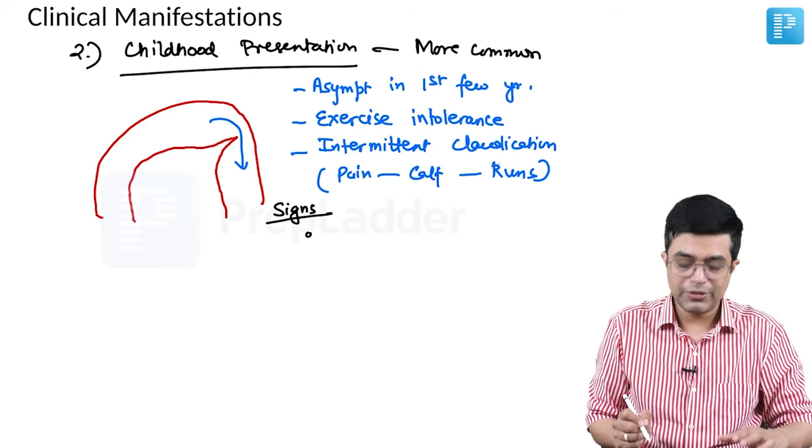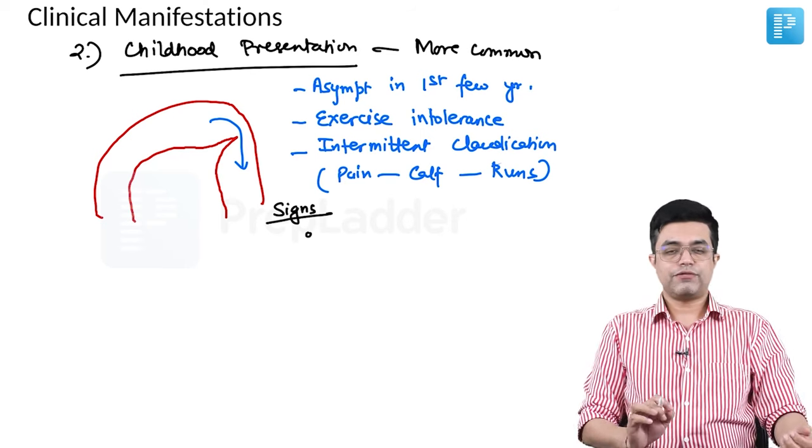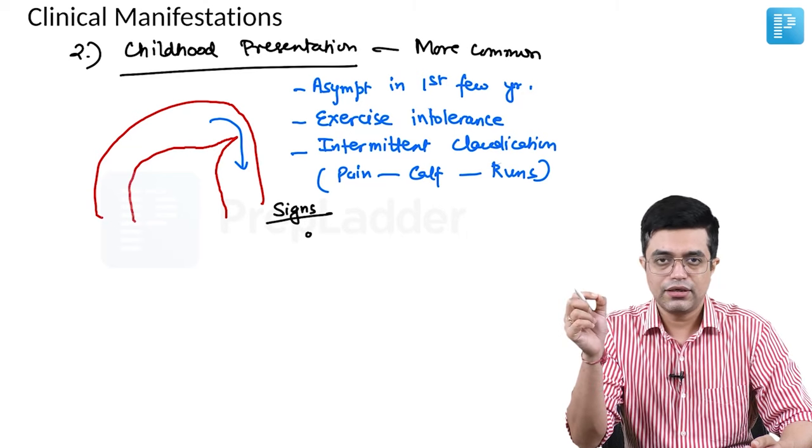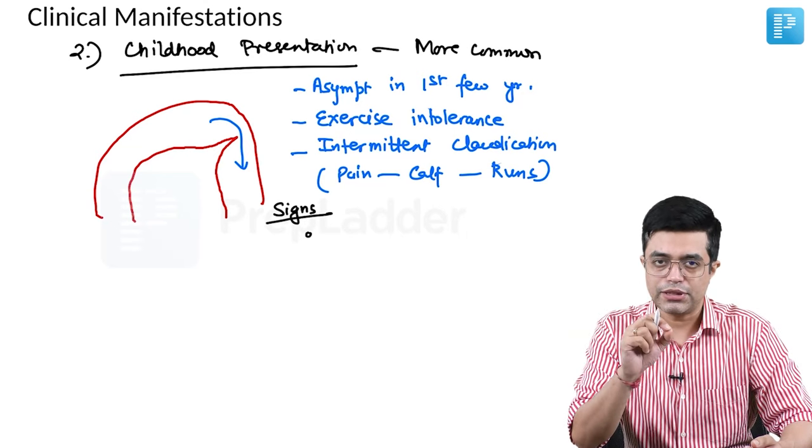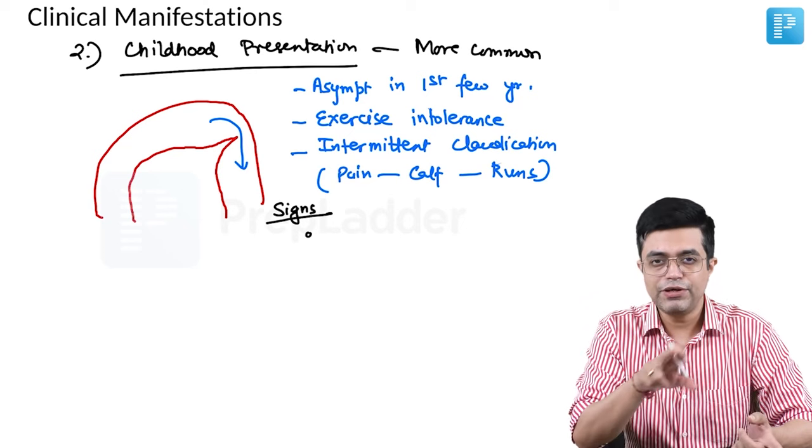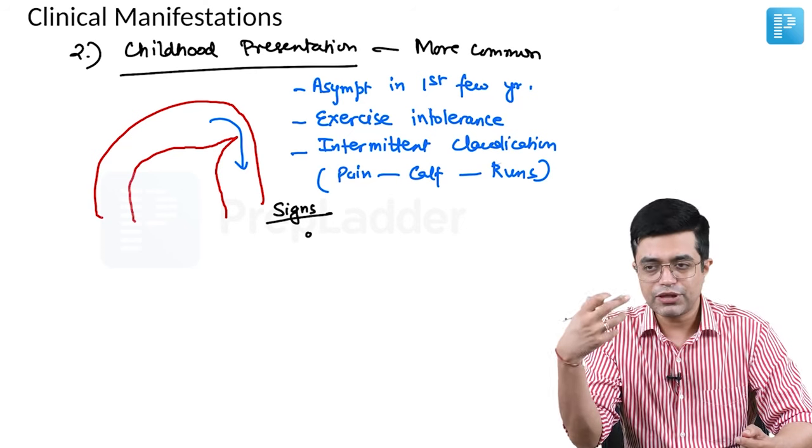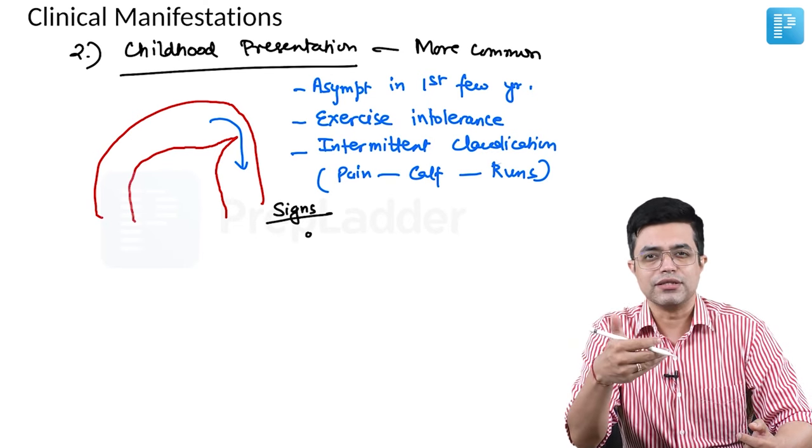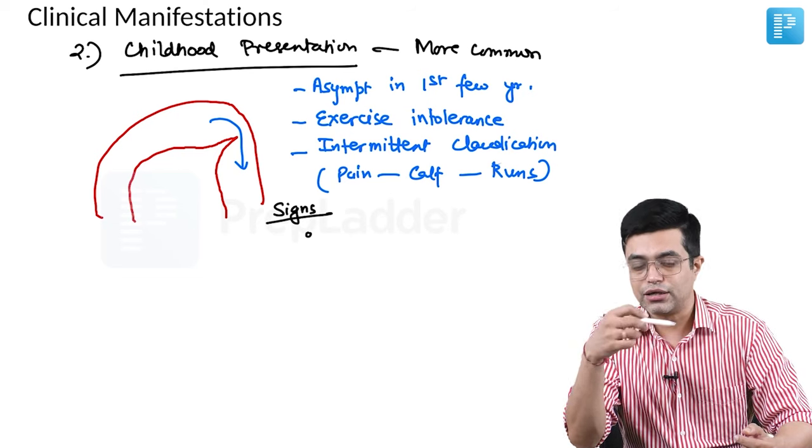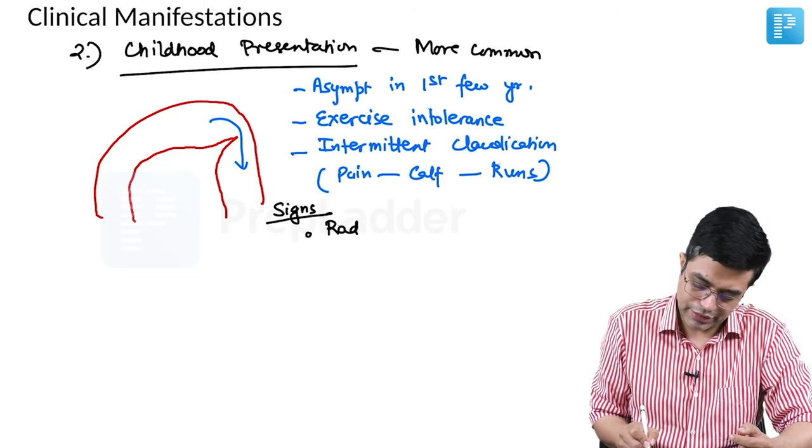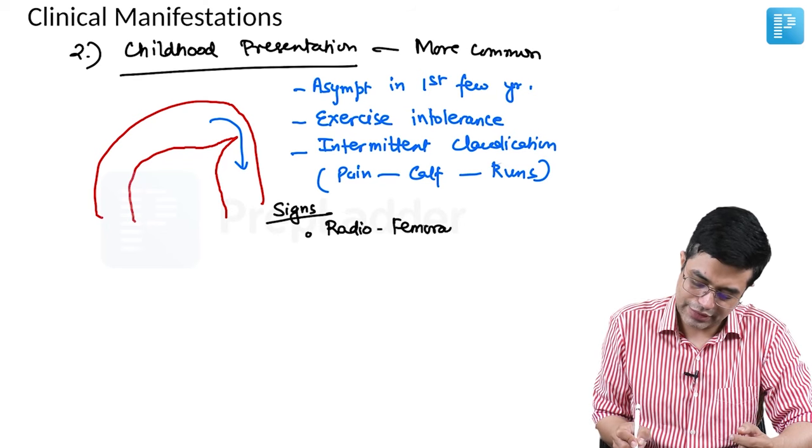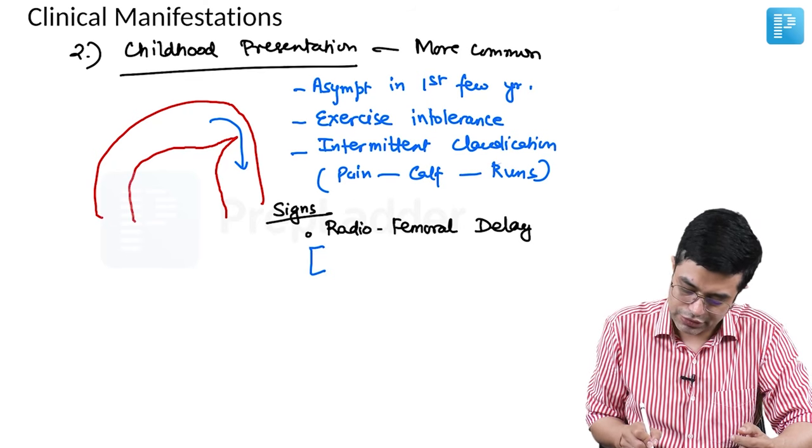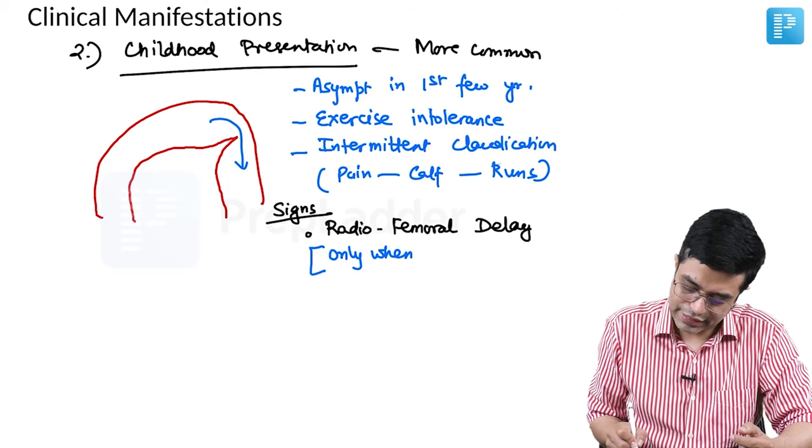What are the signs that you will find in these children? Normally, if you check for radial and femoral pulse, the femoral pulse comes a bit earlier compared to radial pulse. But here, radial pulse will come first, femoral pulse will be delayed. The reason is the femoral blood flow is being maintained by multiple collaterals and blood is taking longer time to reach the femoral artery. So the first sign will be radiofemoral delay. This is a common sign which can be asked in exams. But you need to understand radiofemoral delay happens only when collaterals have developed.